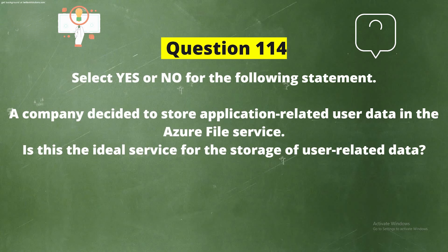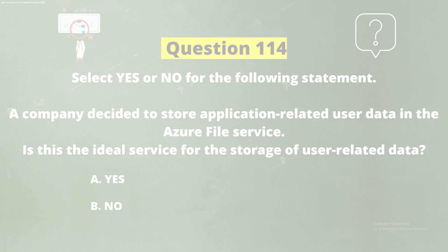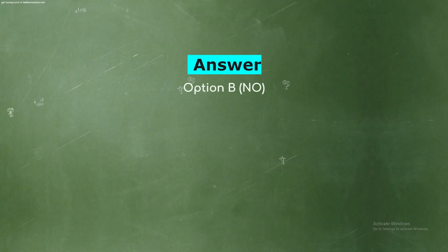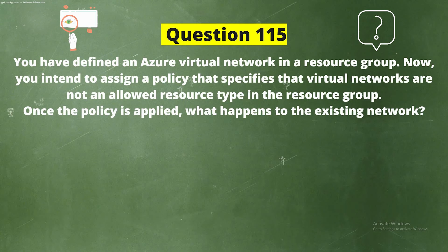Question 114: Select yes or no — a company decided to store application-related user data in the Azure File Service. Is this the ideal service for storage of user-related data? The correct answer is Option B: No. Azure File Service, also known as Azure Files, is designed to allow organizations to share files on-premises and in the cloud using the Server Message Block (SMB) protocol and APIs, not for storing user-related application data.